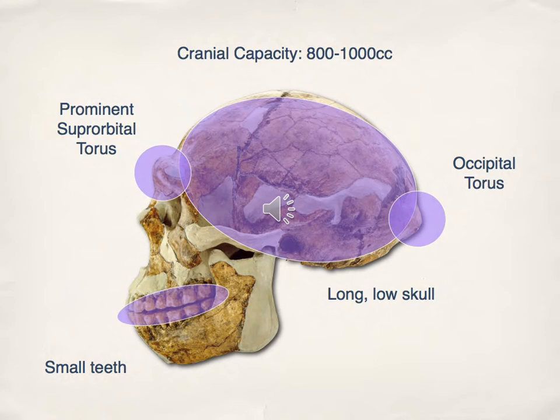Homo erectus has a long, low skull with a big brow ridge, and they typically have small teeth. You can see the teeth getting smaller and kind of tucking underneath the face.